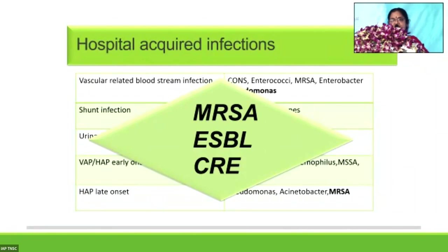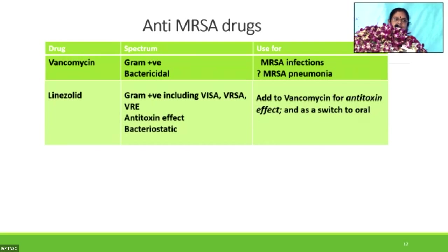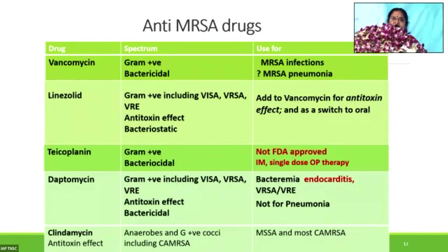The common anti-MRSA drugs we use are vancomycin and linezolid. Vancomycin is excellent for its bactericidal effect in MRSA pneumonias, but beware of nephrotoxicity. Linezolid is added to vancomycin for its antitoxin effect or when switching vancomycin to an oral drug — but it is bacteriostatic and cannot be used when the child is in shock. Teicoplanin against MRSA is an excellent drug, licensed in Europe, and can be given as IM single-dose outpatient therapy, but it is not FDA-approved. Daptomycin has very limited experience and is used mainly in endocarditis. Clindamycin is used for its antitoxin effect.